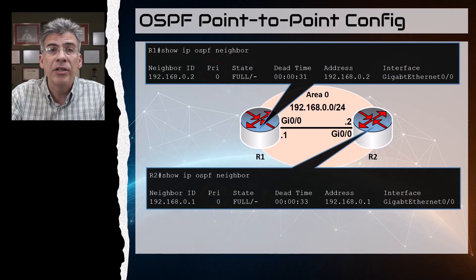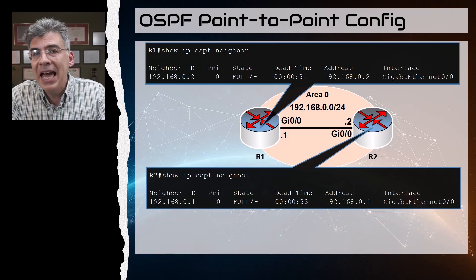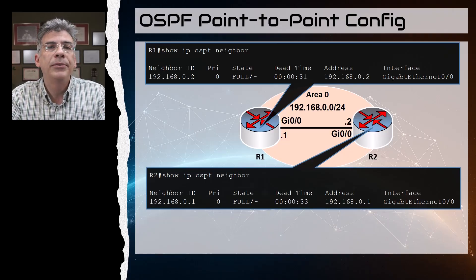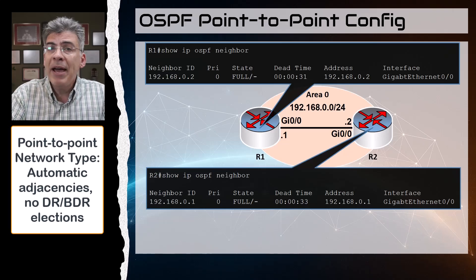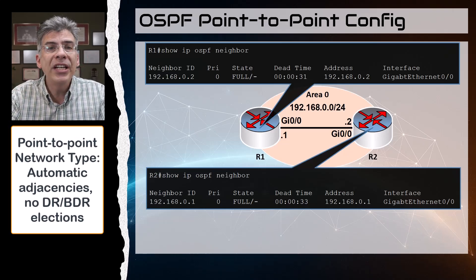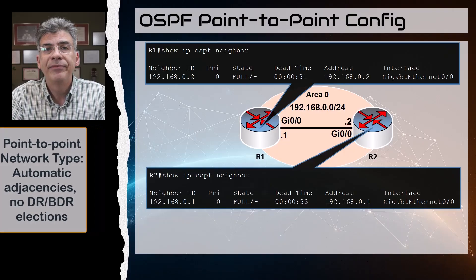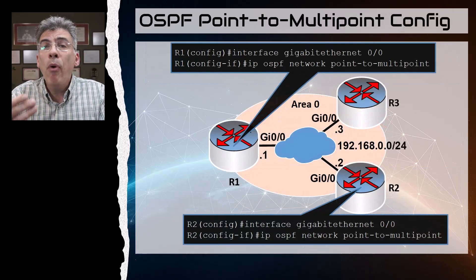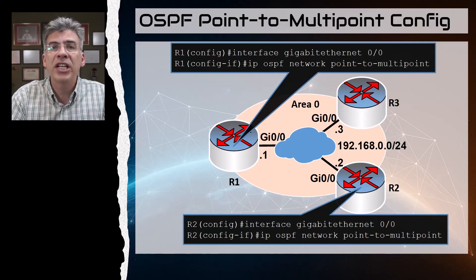The priority of both routers is set to zero automatically with a point-to-point network type, which is the reason there is no election. This would be employed if you have a point-to-point VPN or a serial link, for example. That's the point-to-point network type: automatic neighbor discovery but no DR/BDR elections because they're not needed.